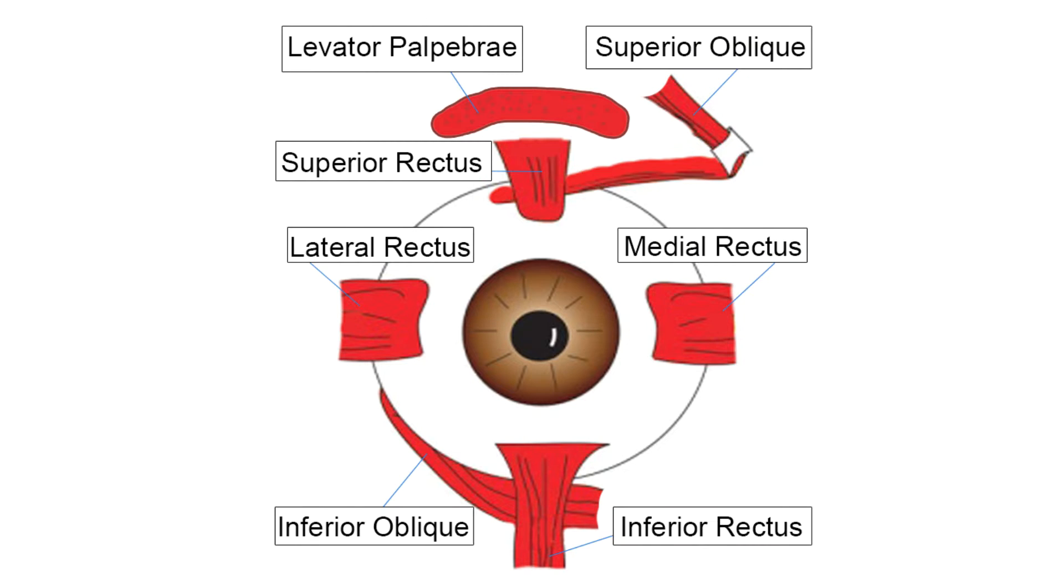This is how the superior oblique attaches to the eye. The muscle passes through a dural sleeve called the trochlea and turns more than 90 degrees to insert on the top of the eye.